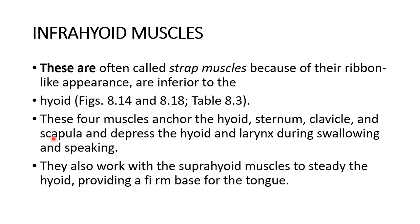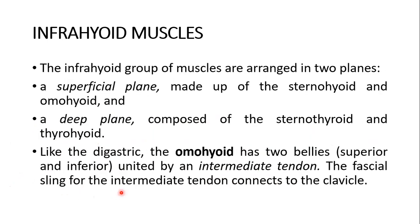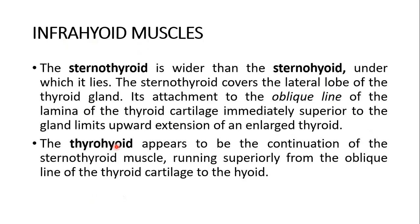The infrahyoid muscles are in a superficial plane and in a deep plane. The superficial plane is the sternohyoid and the omohyoid; the deep plane is the sternothyroid and the thyrohyoid. The omohyoid has two bellies, and the digastric has two bellies as well, as mentioned and given in that table.